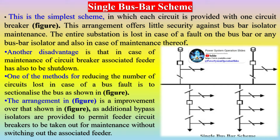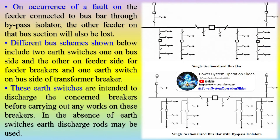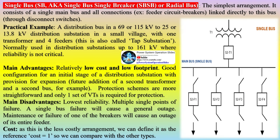An improvement allows additional bypass isolators to permit feeder circuit breakers to be taken out for maintenance without switching out the associated feeder. On occurrence of a fault on the feeder connected to the busbar through a bypass isolator, the other feeders on that bus section will also be lost. Different bus schemes include two earth switches — one on the bus side and the other on the feeder side for feeder breakers — and one earth switch on the bus side of the transformer breaker. These earth switches discharge the concerned breakers before carrying out any works. In the absence of earth switches, earth discharge rods may be used.